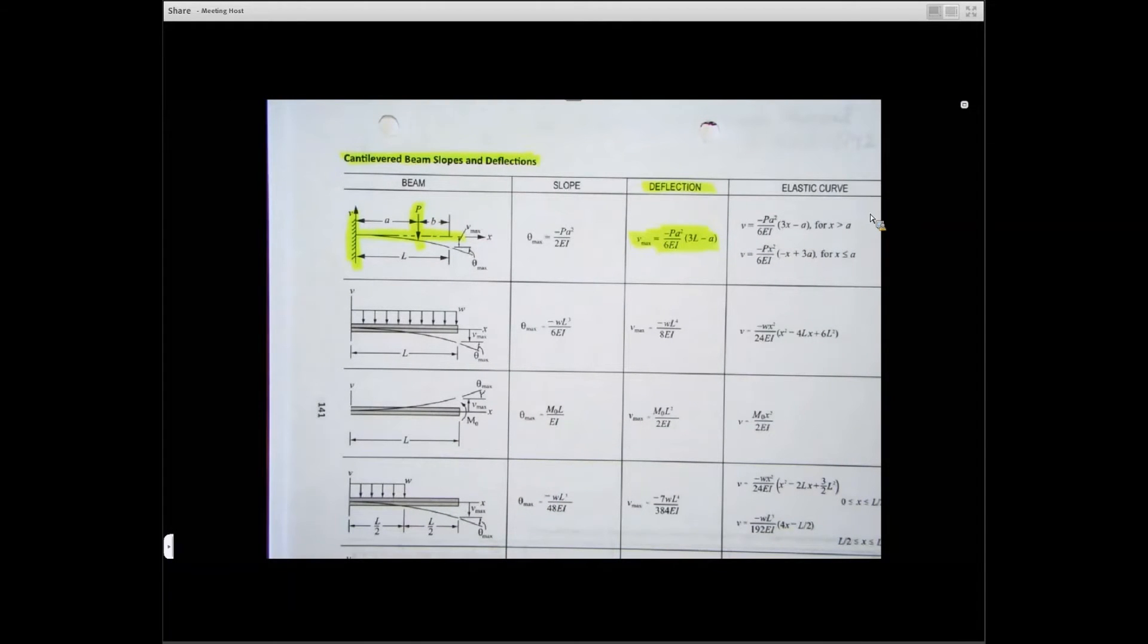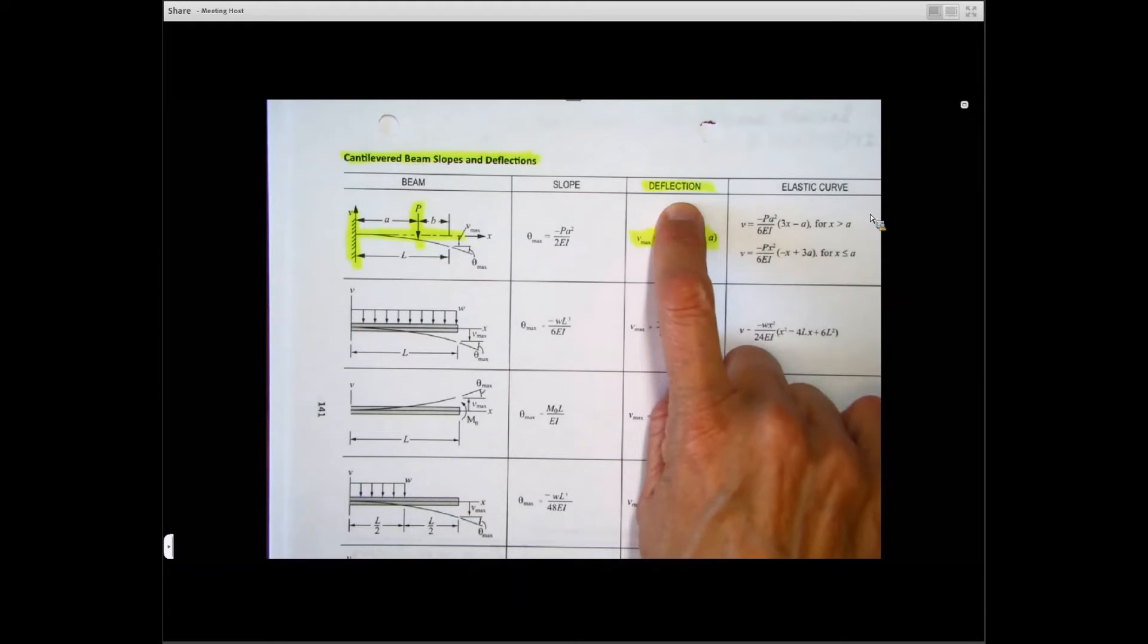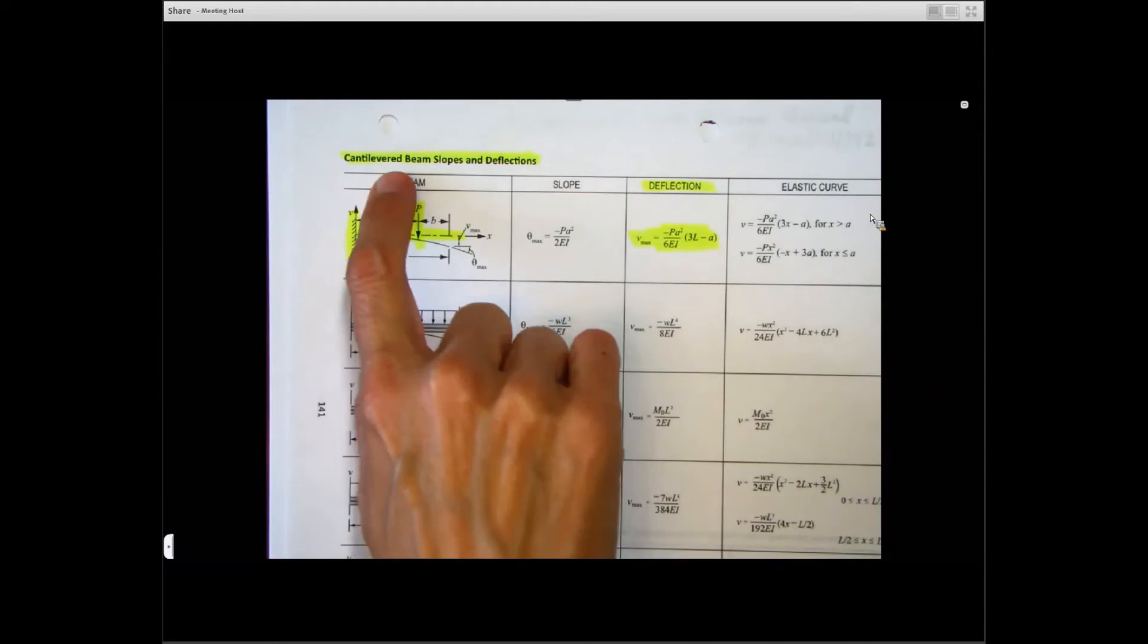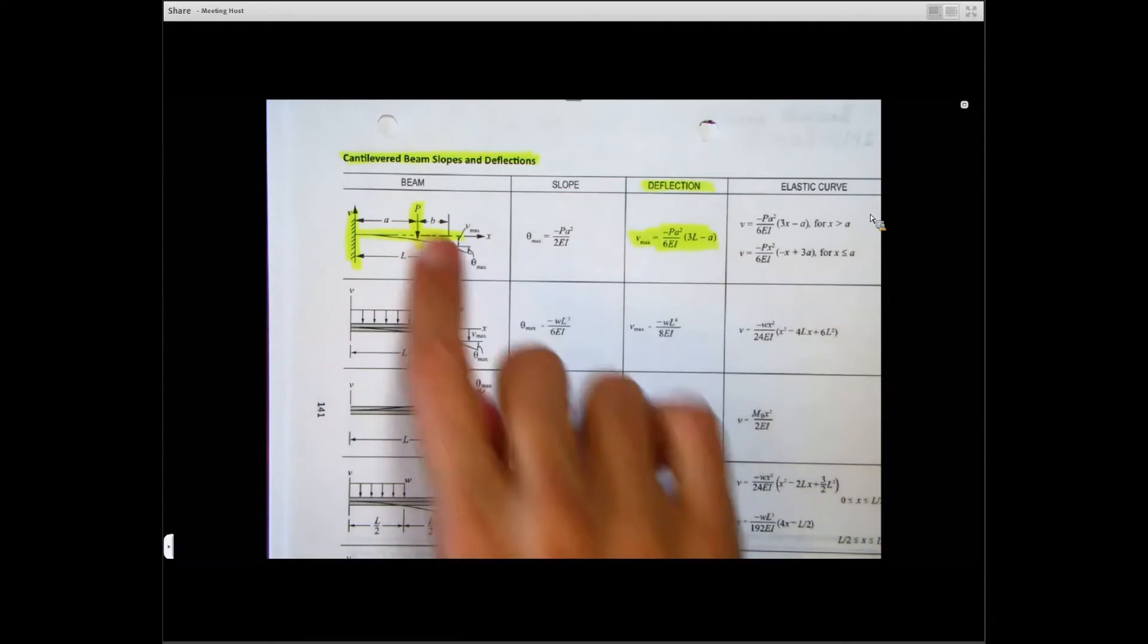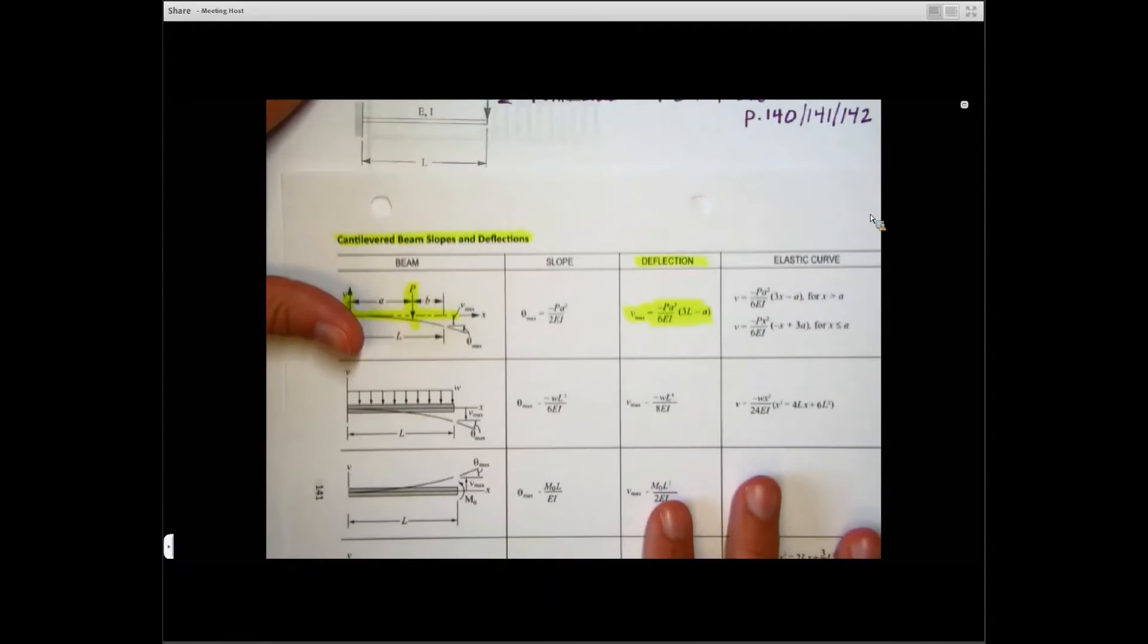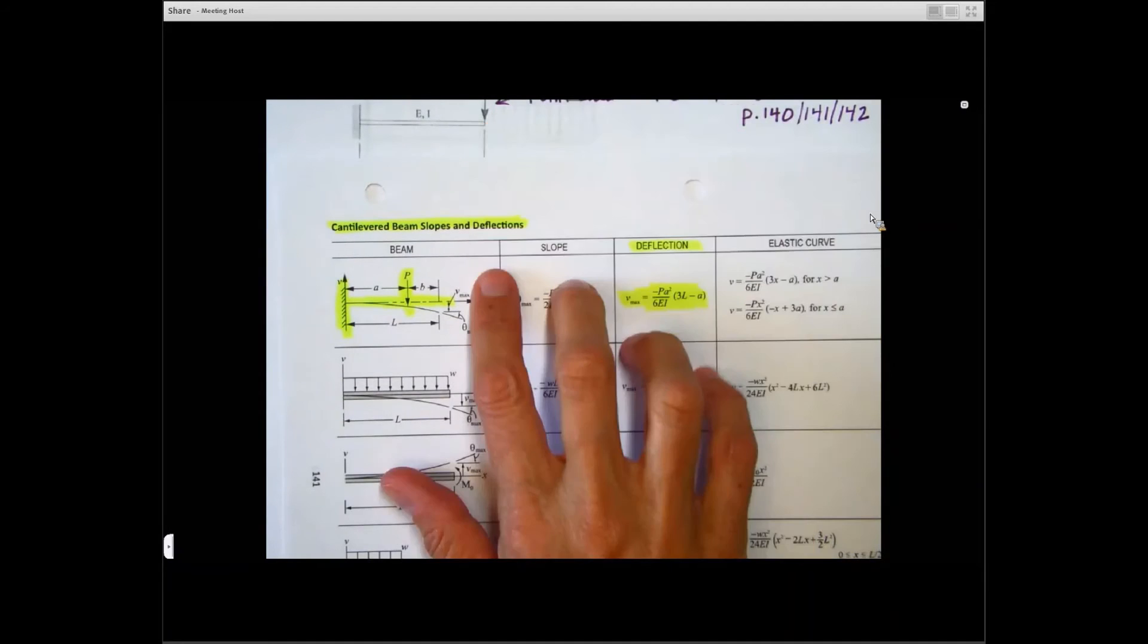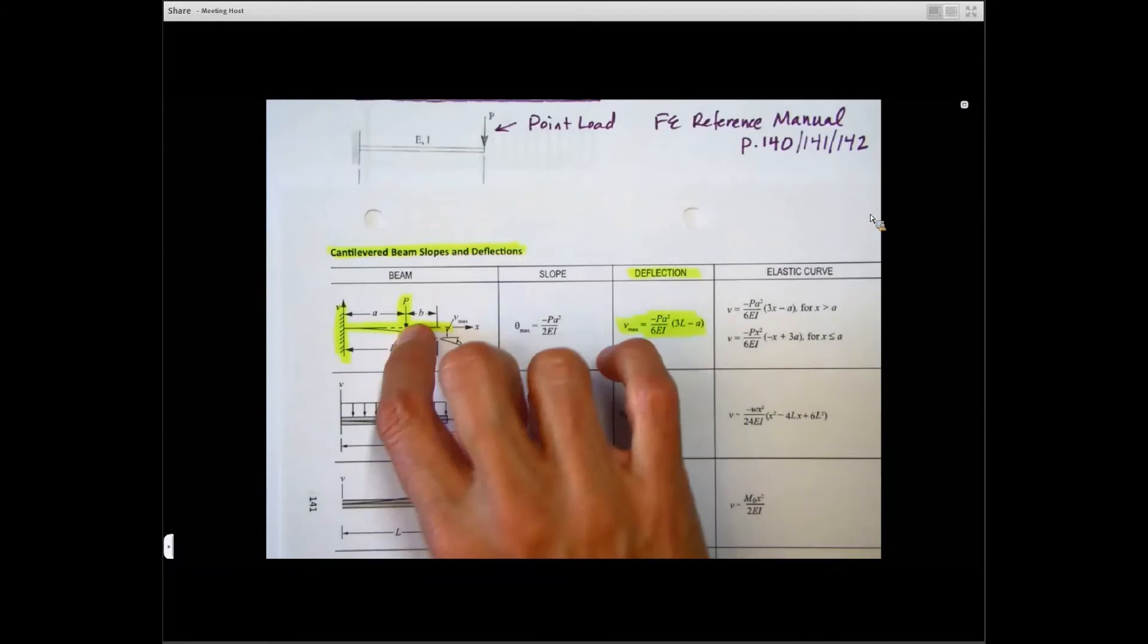Let's zoom in on this beam. So how do I know to use this? Well, I'm being asked for deflection, and it is a cantilever beam, and it has a point load. Now, we take a look at this and say, well, that point load is not at the end, right? This point load's at the end. This point load is in a little bit from the end.